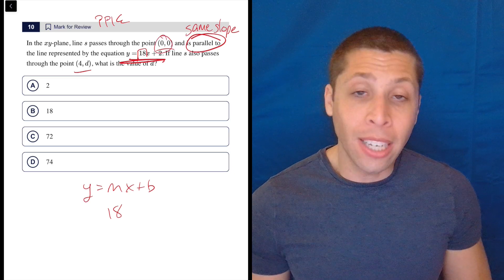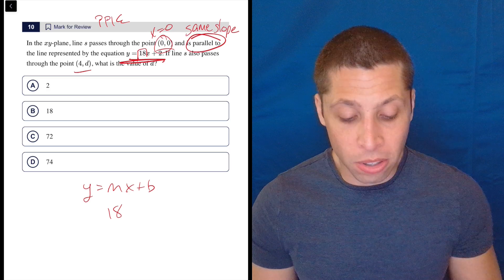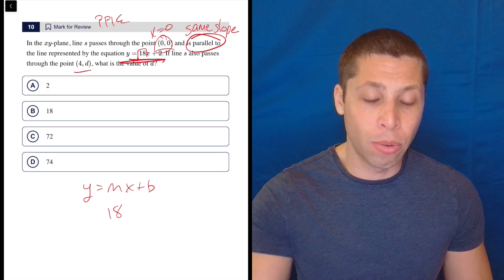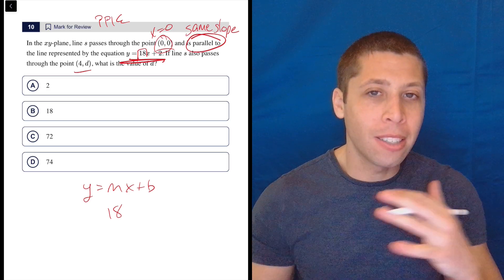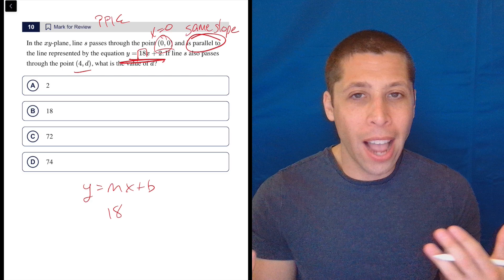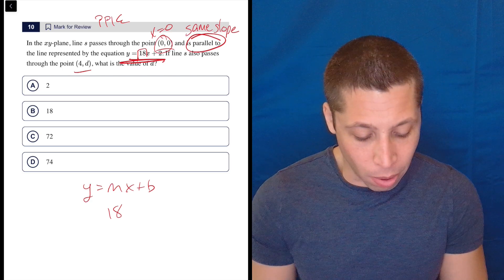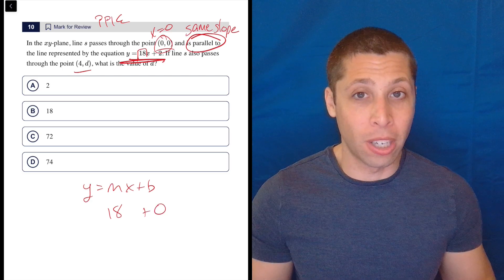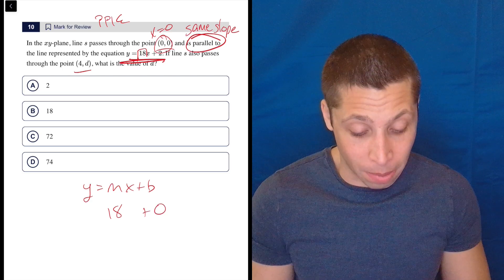I also know that any y-intercept is where x equals zero. So when it says line s passes through that point, I don't need to plug that in to solve for b. I now know that b is zero. I'll write it just for the sake of completion here, but that is the y-intercept. They don't use that word, but they're talking in code.